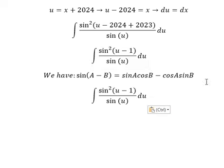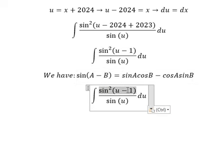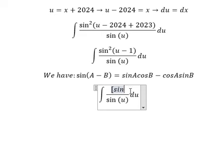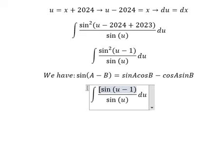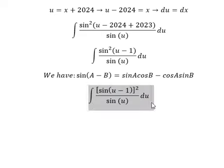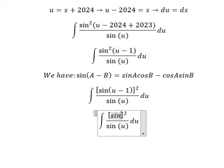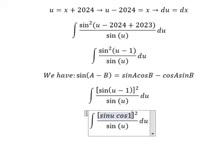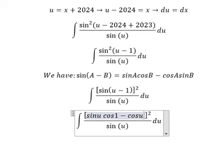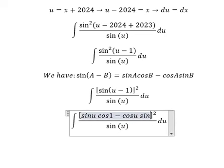We can apply the formula here, so that should be like this. This one gives us sine(u)cosine(1) minus cosine(u)sine(1).